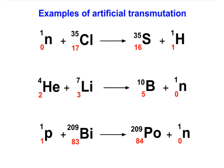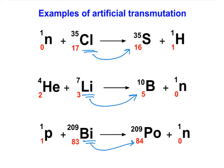Here are a few examples of artificial transmutation. Notice it's not only alpha particles we can use — we can also shoot neutrons, protons, or electrons into nuclei to transmute one nuclide into a different nuclide and initiate transmutation.